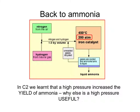In C2 we learned about the preparation of the gas ammonia, and we learned that it was produced by reacting two other gases together, nitrogen and hydrogen, which are mixed together in the correct proportions and then put into a reaction vessel at 450 degrees, 200 atmospheres of pressure and an iron catalyst. At this stage we learned that the 200 atmospheres of pressure was important in order to increase the yield, or the percentage of ammonia in the mixture.